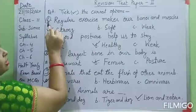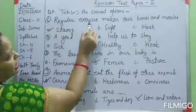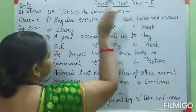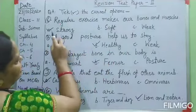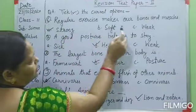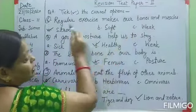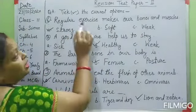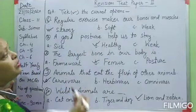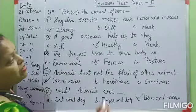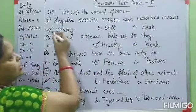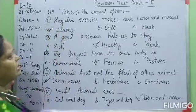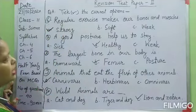Question number six: regular exercise makes our bones and muscles — A: strong, B: soft, C: weak. When we do regular exercise, our bones and muscles become strong. That's why you have to choose option A — strong.